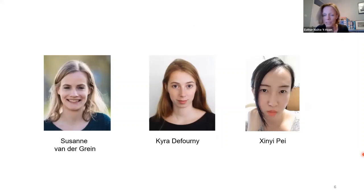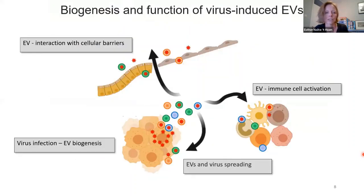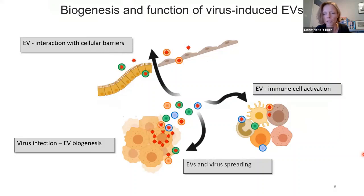In collaboration with others, we've looked at the EV content and function of parasite EVs and bacterial EVs. But by far the most work done in my group has been on how RNA viruses — and mostly the picornaviruses — interfere in EV release by host cells. This work has mainly been done by Susanne van der Grijn, Kira, who is here today to present, and Zin-Yi Peij. The group has now grown, which allows us to answer even more questions. The key questions we want to answer are: how do virus infections influence EV biogenesis, how can EVs influence virus spreading to neighboring cells or across cellular barriers, and how do virus-induced EVs modulate immune cell function.